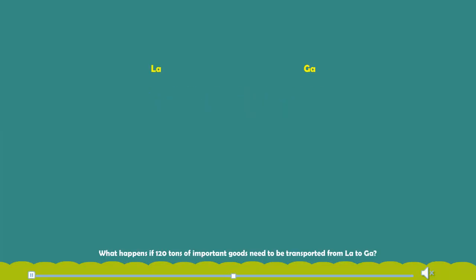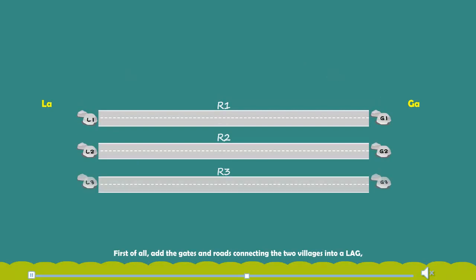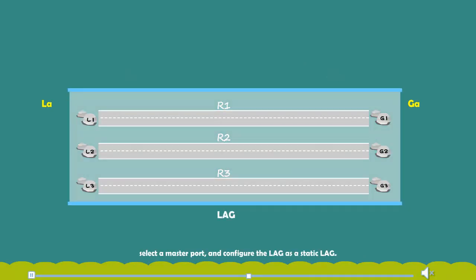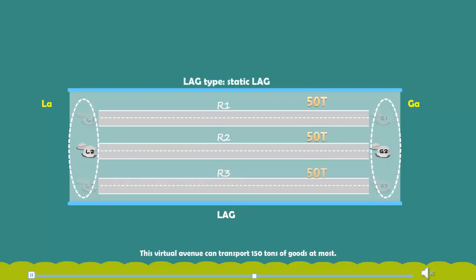What happens if 120 tons of important goods need to be transported from La to Ga? First of all, add the gates and roads connecting the two villages into a LAG. Select the master port and configure the LAG as the static LAG. This virtual avenue can transport 150 tons of goods at most.